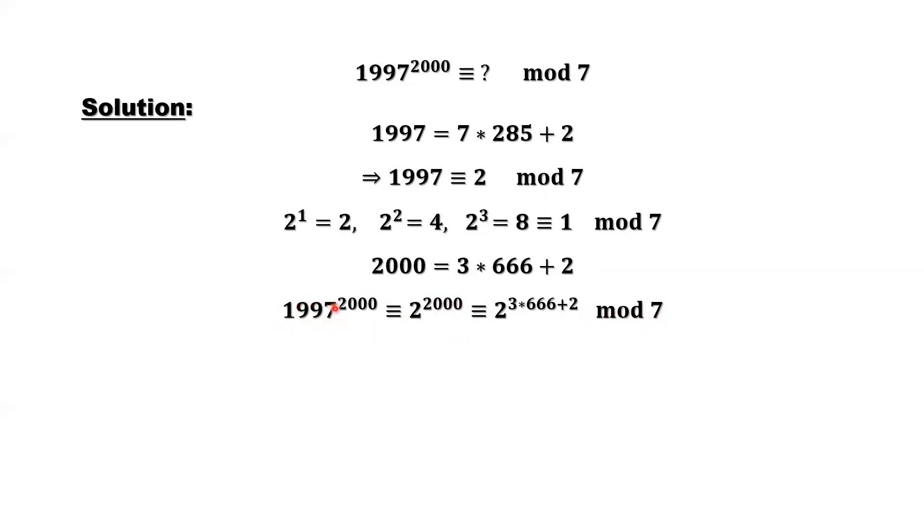To find this, the remainder is the same to find the remainder of this. Now we can rewrite 2000 in this kind of format.